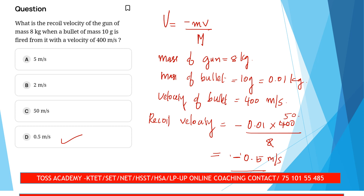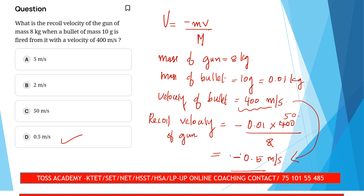The recoil velocity of the gun is 0.5 m/s, which is much smaller compared to the velocity of the bullet, which is 400 m/s. This makes physical sense because the gun has a much larger mass than the bullet.